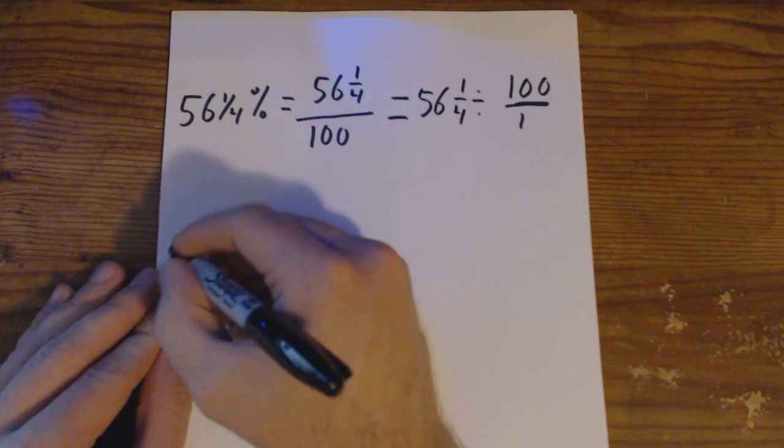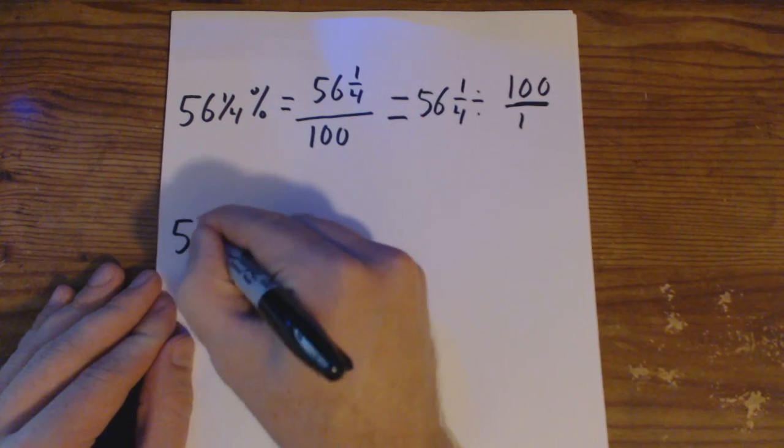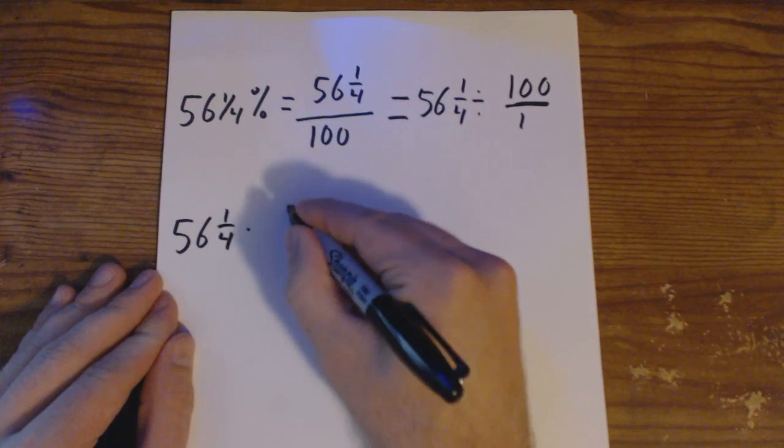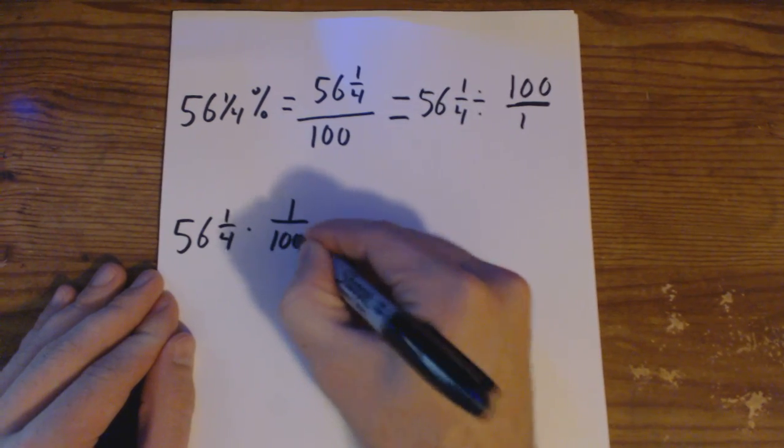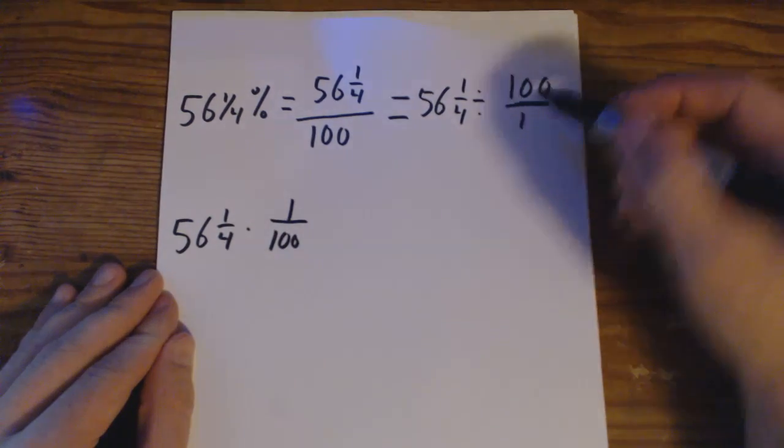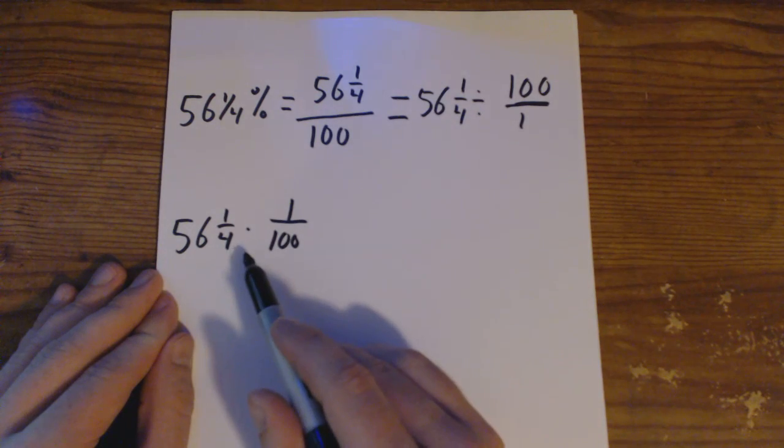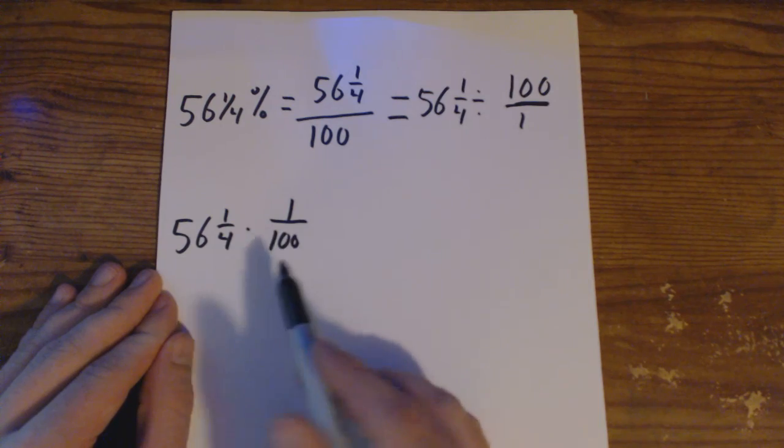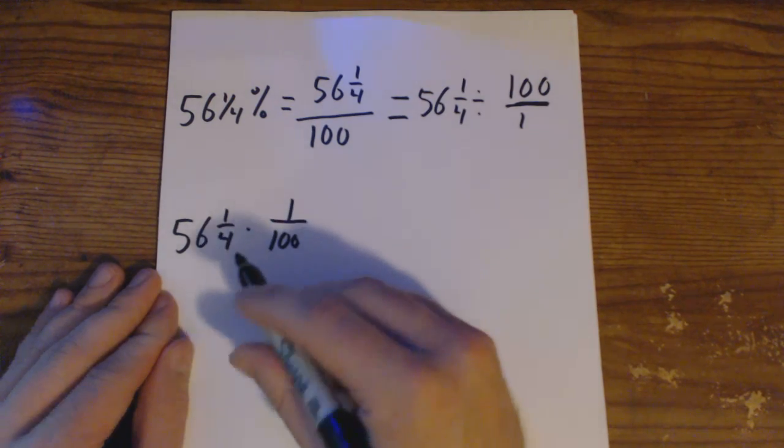We're going to have 56 and 1 fourth times 1 over 100. We just use the reciprocal here to change that division to multiplication. Still, we don't want to work with a mixed number when we're multiplying two fractions. So let's figure that out.